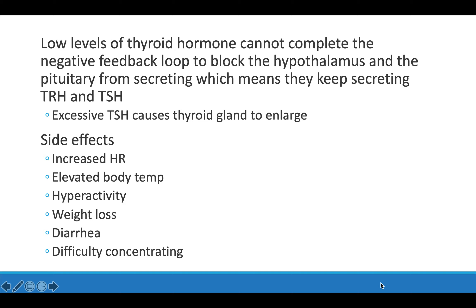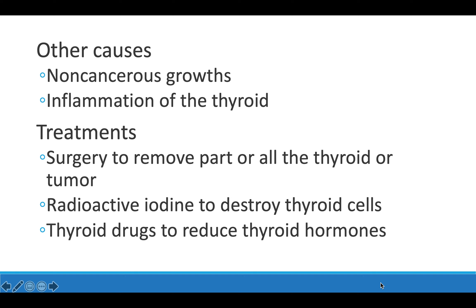Side effects of hyperthyroidism include increased heart rate, elevated body temperature, hyperactivity, weight loss, diarrhea, difficulty concentrating, and enlarged thyroid glands. Other causes include non-cancerous growths or general thyroid inflammation. Best treatments include removing the thyroid or the tumor causing the disorder. Radioactive iodine can be introduced into the body to destroy the thyroid cells causing the issue. Medications can also be taken to reduce thyroid hormone levels.